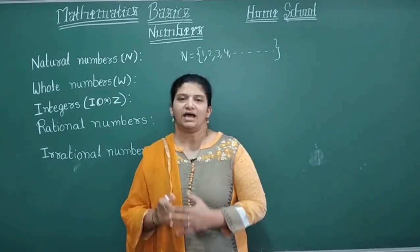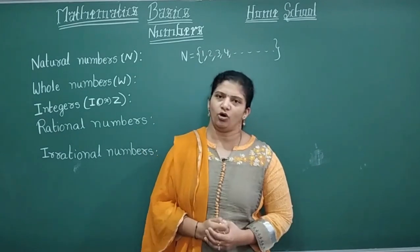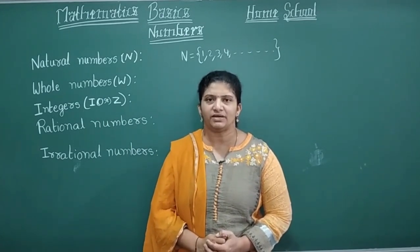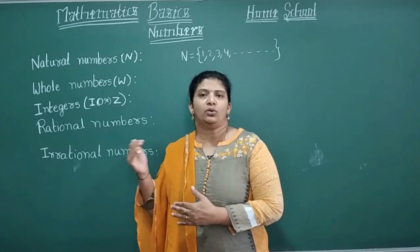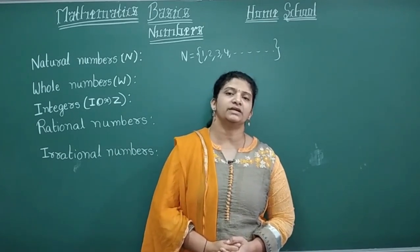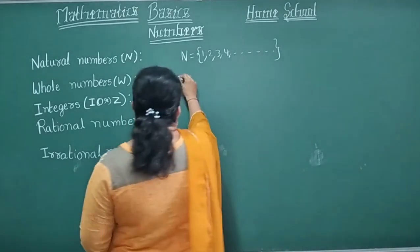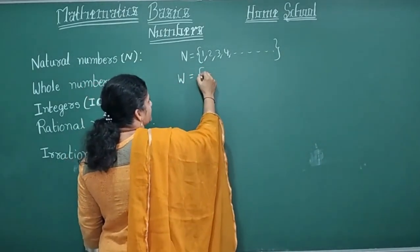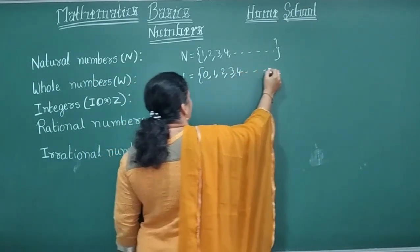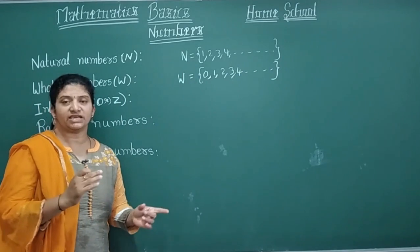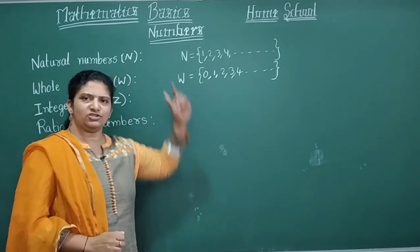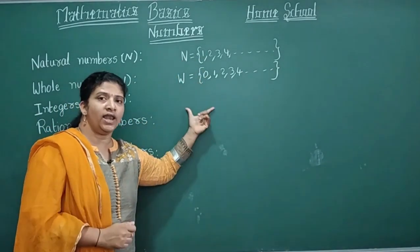The next type: natural numbers including zero are called whole numbers. All the counting numbers together with zero are called whole numbers. Whole numbers are represented by the capital letter W. W = {0, 1, 2, 3, 4, ...} and so on.